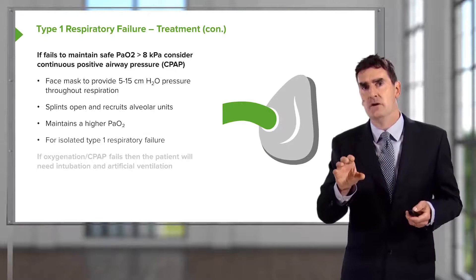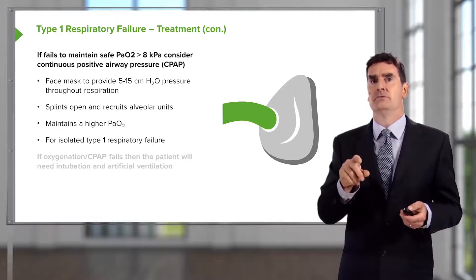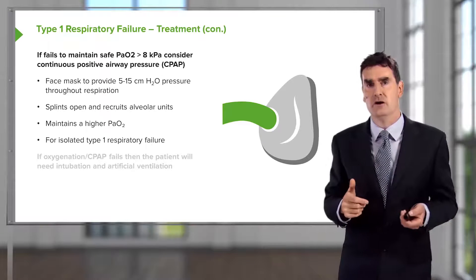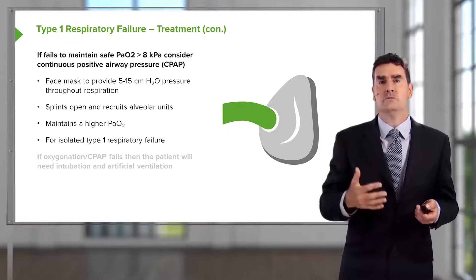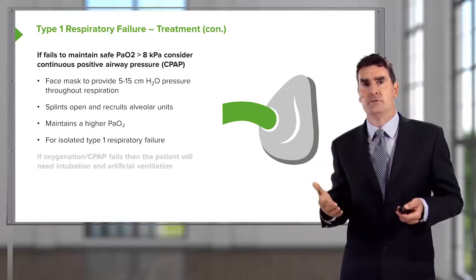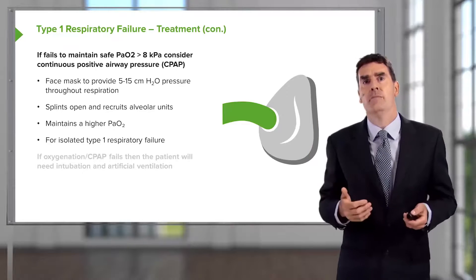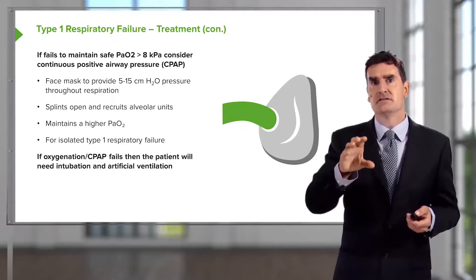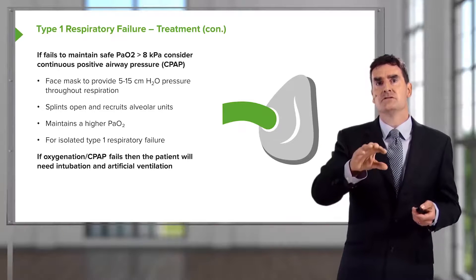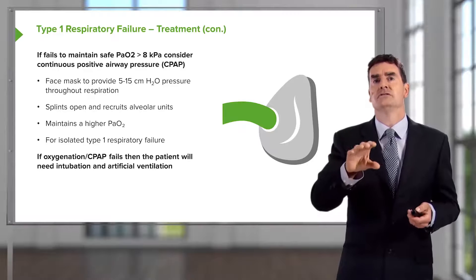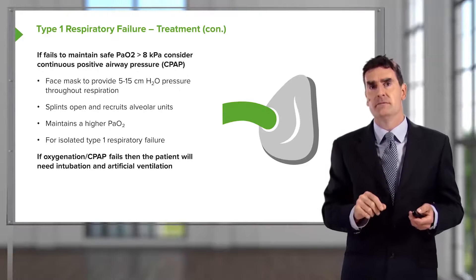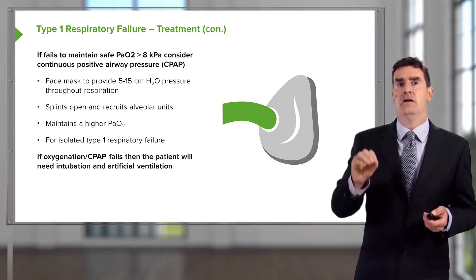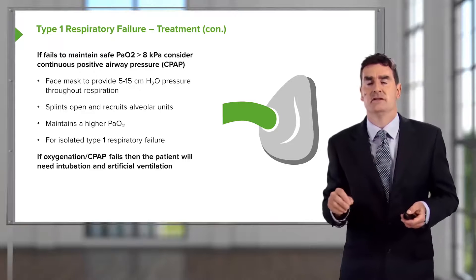This is a good treatment for isolated type 1 respiratory failure — somebody presenting with, for example, community-acquired pneumonia or pulmonary edema, where they have type 1 respiratory failure but no other major organ damage. If this starts to fail or the patient becomes tired despite CPAP therapy, then the next step will be intubation and artificial ventilation in the intensive care department.